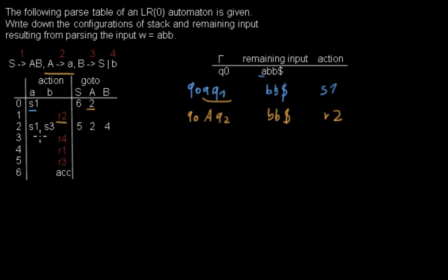Then in Q2, what I can do is I can either shift an A or shift a B, and my remaining input I have a B. So I'm going to shift that B. That means B to here and now I'm going into Q3. Now my remaining input has only one B left and the action was shift into 3.